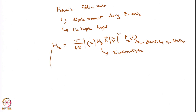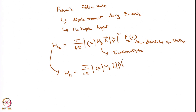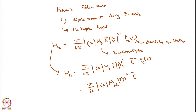Now I want to use this equation and rewrite it. W12 can also be written as π/(6ℏ) times |⟨2|μZ|ε|1⟩|² with the electric field factored out, times ρ(E). So this can be written as π/(6ℏ) times |⟨2|μZ|1⟩|² — only the component of μZ that is aligned with the electric field — times |E|² times ρ(E).